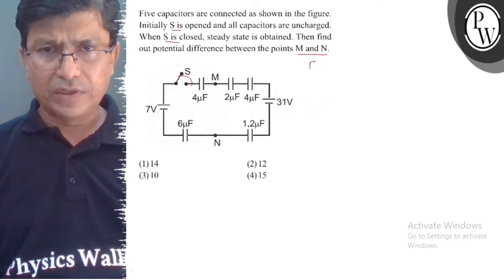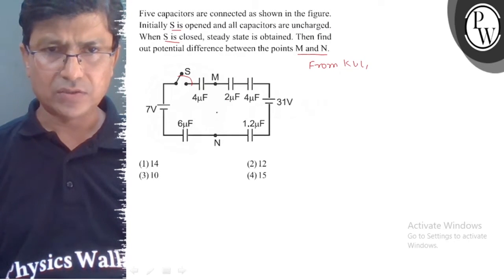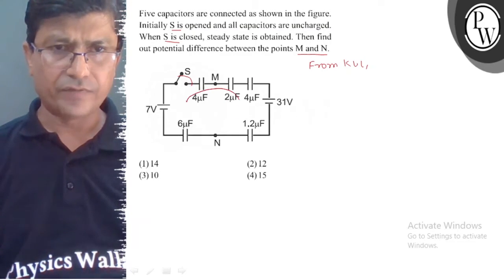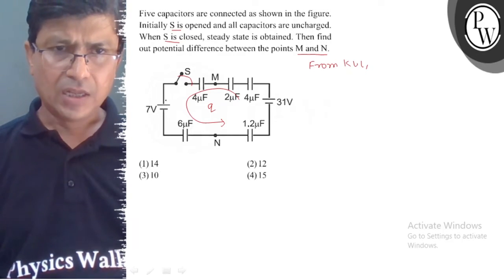From Kirchhoff voltage law, we'll analyze this loop to see how the Q charge is distributed. Starting from here...